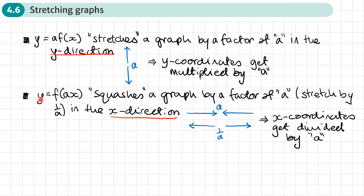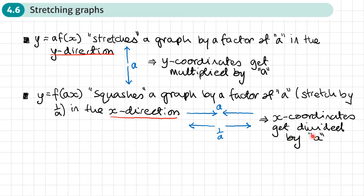The second stretch or squash is where you get the number inside the brackets. As with translations, when a number is in the bracket it always does the opposite to what we expect. So a squashes the graph by a factor of a, which is the same as stretching by a factor of one over a in the x direction. To sketch it, divide the x coordinates by a and leave the y coordinates unchanged.